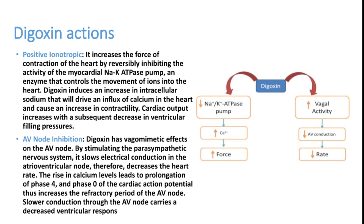There are two important actions of digoxin. First is a positive inotropic effect — it increases the force of contraction of the heart. This is very important when a patient is having LV or RV failure; digoxin increases the pumping of the heart. Due to its very narrow therapeutic index, use of digoxin has come down significantly.